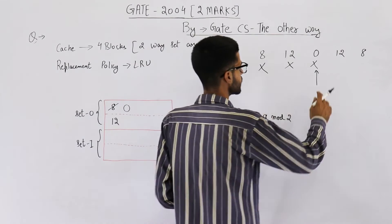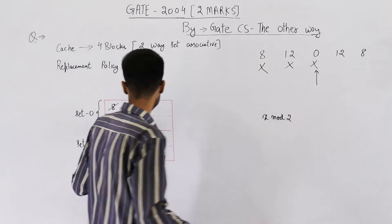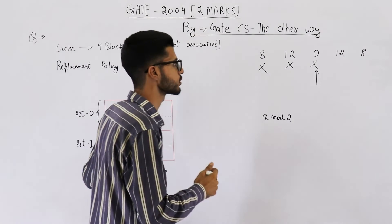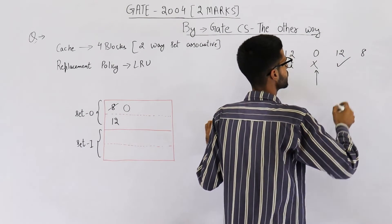Next reference is to 12. Now you see 12 is found in the cache. We have 12. That means this reference will be a hit. So here we have our first hit.